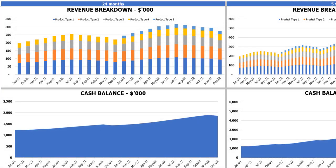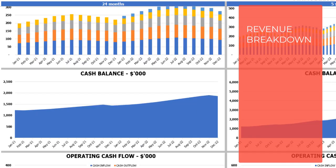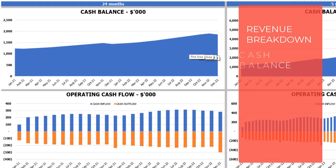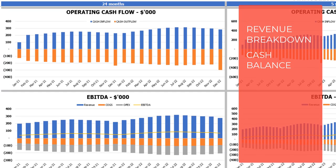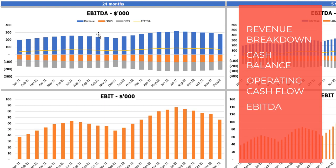On the financial charts tab you may see the main financial outputs in graphical form. On the left side you may see charts for 24 months and on the right side for five years or 60 months. The top charts show revenue breakdown by product types, followed by cash balance charts for two years and five years, then operating cash flow broken down by cash inflow and cash outflow, then EBDA breakdown showing revenue, COGS, and OPEX, with EBDA value shown as a yellow line by months.